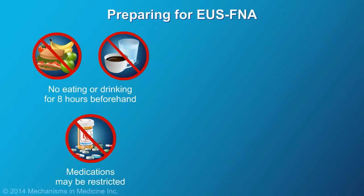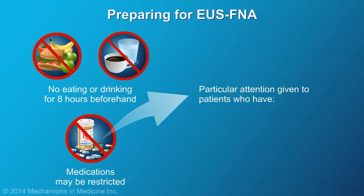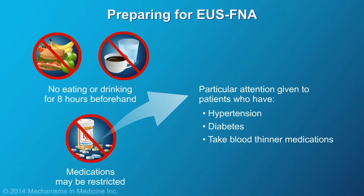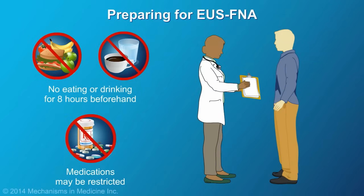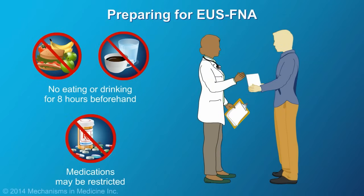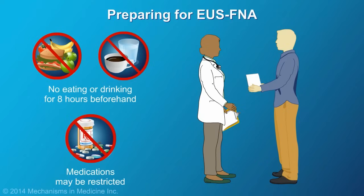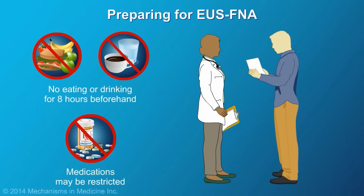Medications may be restricted prior to and after EUS-FNA. This will be determined by your doctor, with particular attention given to patients who have hypertension, diabetes, who take blood thinner medications, or who have bleeding disorders. Your doctor will provide written instructions on how to prepare for your EUS-FNA, the follow-up care required at home, and how to recognize complications in case they occur.